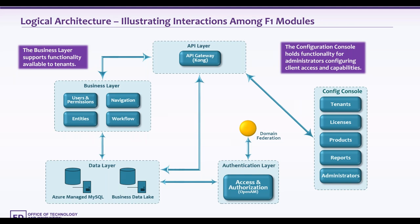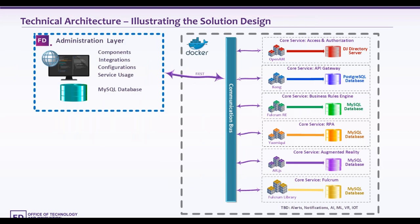So this is how the core modules are deployed. We have each core module independent, with its own database in a Docker container, its own application and database in the Docker container. These are all separate applications and they are all connected to the API Gateway — this is the common bus that connects to Fulcrum One. We have an identity and access management core module, an API Gateway module, a business rules engine module, an RPA module, an augmented reality module, and a Fulcrum administration module. All these modules are connected through the API to the API Gateway into one single bus.